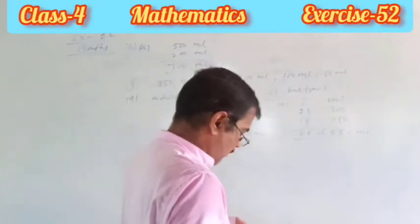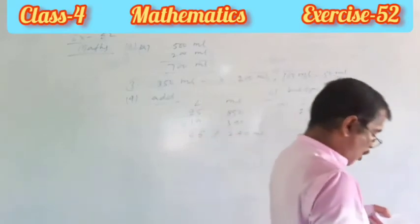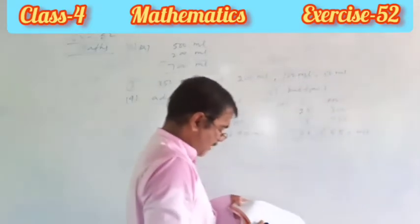Question number seven: subtract the following. First you write in column method, then you subtract.